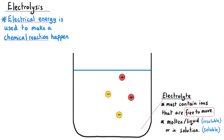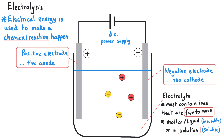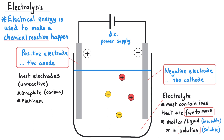In this video we'll take a look at what happens when you use aqueous solutions, which are more complicated than using molten electrolytes. To make the electrolysis work, you need to put two electrodes into your electrolyte. These need to be made of some kind of inert substance, which means that they are unreactive and so won't react with the electrolyte. We normally use graphite, which is a form of carbon, or platinum.